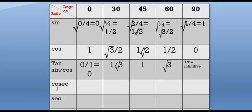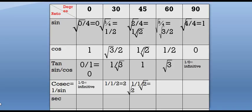Now come to cosec. As we know, cosec is equal to 1 by sin, so we have the value of sin theta. We will divide 1 by every sine value. Start from 0: 1 by 0 is equal to infinity. For 30: 1 by 1 by 2 is equal to 2. For 45: 1 by 1 by root 2 is equal to root 2. For 60: 1 by root 3 by 2 is equal to 2 by root 3. And finally for 90: 1 by 1 is equal to 1.